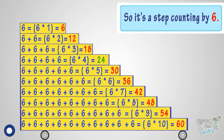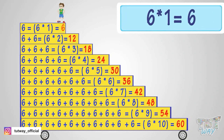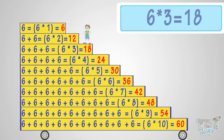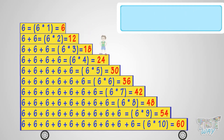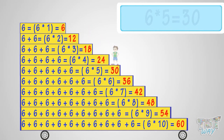So let's revise what we learned. Six times one is six. Six times two is twelve. Six times three is eighteen. Six times four is twenty-four. Six times five is thirty.